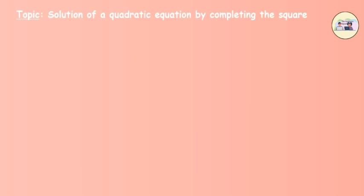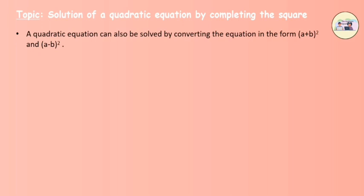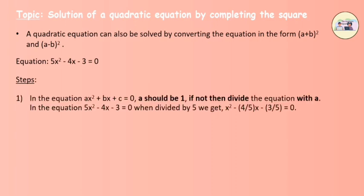Solution of a quadratic equation by completing the square. A quadratic equation can also be solved by converting the equation into the form (a + b) squared or (a minus b) squared. Consider the equation 5x squared minus 4x minus 3 equals to 0. In the equation ax squared plus bx plus c equals to 0, a should be 1. If not, divide the equation by a.